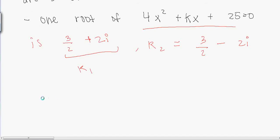Therefore, root 1 plus root 2 is equal to 3/2 plus 2i plus 3/2 minus 2i, which is the same thing as 6/2 or 3.